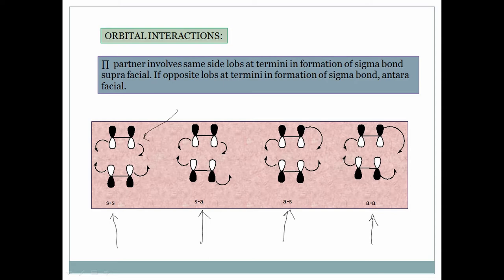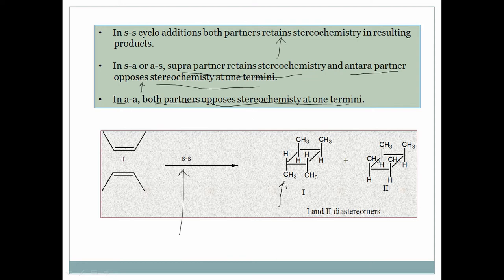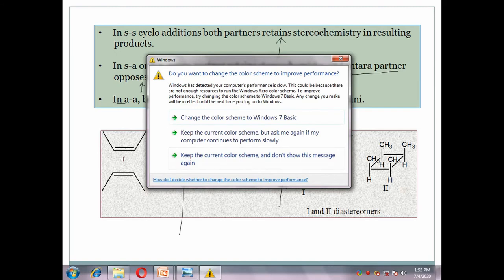In supra-supra cycloaddition, both partners retain stereochemistry in the resulting products. In supra-antara or antara-supra, the supra partner retains stereochemistry while the antara partner inverts stereochemistry at one terminal. All Diels-Alder reactions are supra-supra cycloadditions. For example, with 2-butyne as the dienophile, you get two diastereomeric products with stereochemistry retained, because the reaction proceeds via supra-supra cycloaddition.